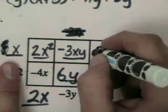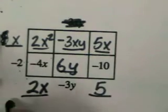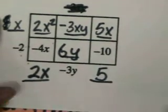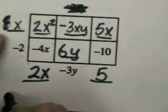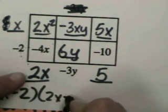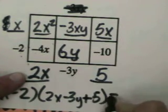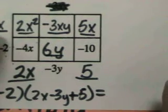We've already got the middle term up there. 5 times x is 5x. Let's see what we can combine. Write it out here. Push it up. x minus 2 times 2x minus 3y minus or plus 5 will equal.